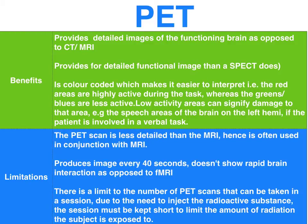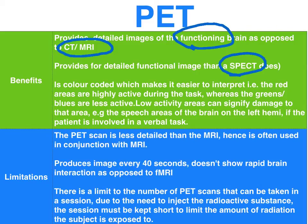In terms of the benefits of the PET scan, it provides functional information as opposed to the CT or MRI which merely provides structural information, and it provides a more detailed functional image in comparison to a SPECT. The colour coding makes it easy to interpret by clearly identifying areas that are high in activity when completing a cognitive task, as well as areas that have reduced activity, which might indicate some brain abnormalities.